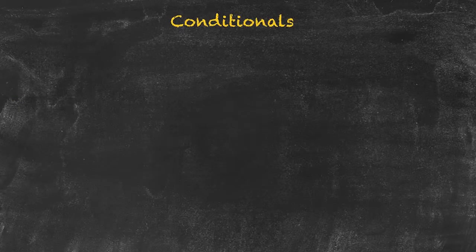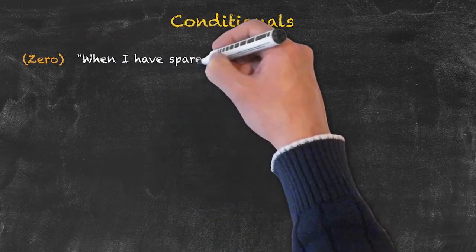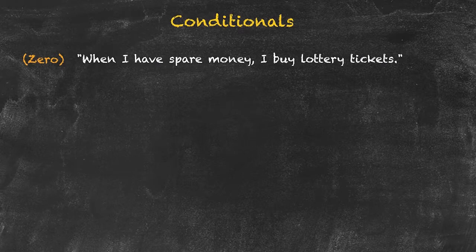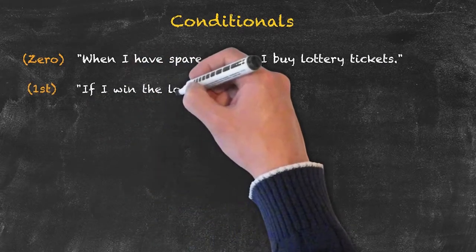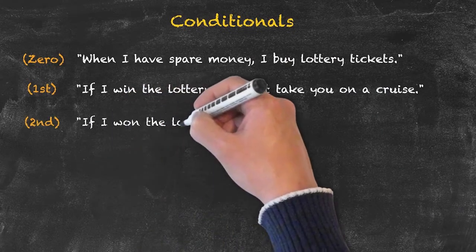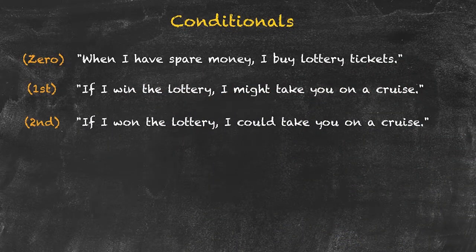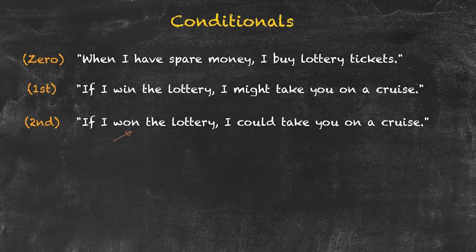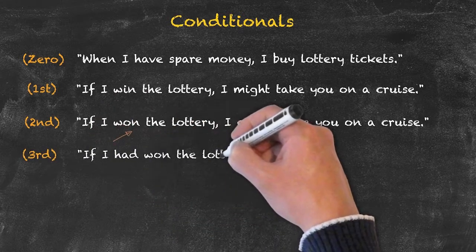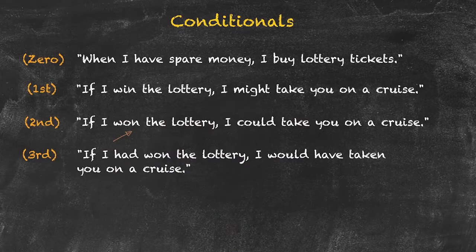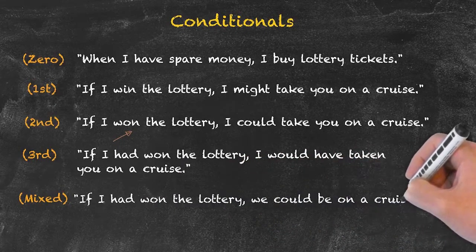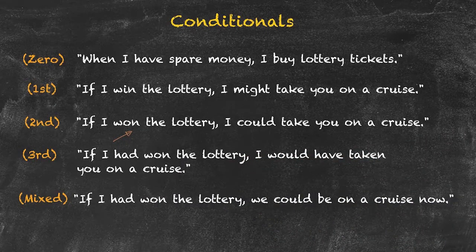Finally, let's look at one situation and change the sentence structure depending on what we're trying to say. Zero conditional: 'when I have spare money, I buy lottery tickets' — that's what's generally true. First conditional: 'if I win the lottery, I might take you on a cruise.' Second conditional: 'if I won the lottery, I could take you on a cruise' — the past simple indicating a reduced degree of certainty. Third conditional: 'if I had won the lottery, I would have taken you on a cruise' — the past result of an imaginary situation. Mixed conditional: 'if I had won the lottery, we could be on a cruise now' — the present situation resulting from an imaginary situation in the past.